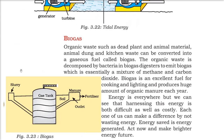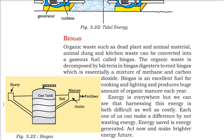Biogas: organic waste like dead plants, animal material, animal dung, and kitchen waste can be converted into gaseous fuel called biogas. The organic waste is put into a biogas digester where bacteria decompose it to emit biogas, which is CH4 (methane) and CO2 (carbon dioxide). After the gas is taken out, the remaining slurry can be used as compost or manure. Biogas is an excellent fuel for cooking and lighting and produces a huge amount of organic manure.